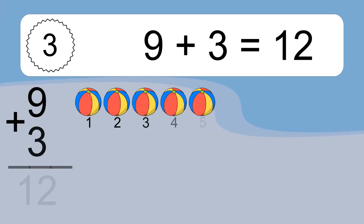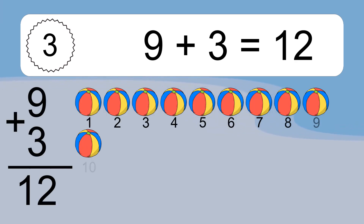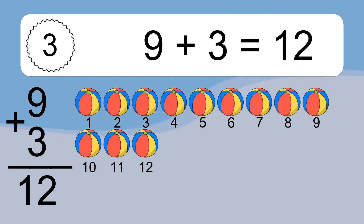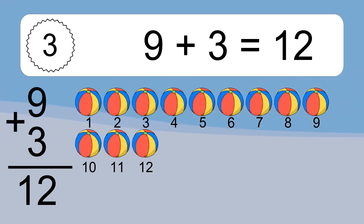9 plus 3 equals 12. Let's count it: 1, 2, 3, 4, 5, 6, 7, 8, 9, 10, 11, 12.